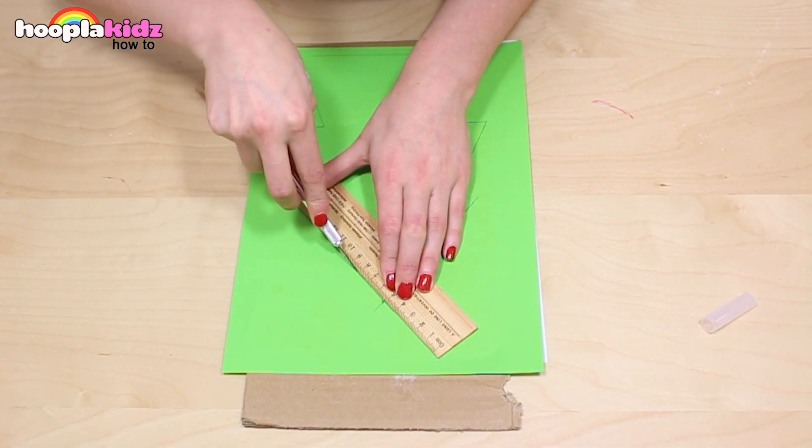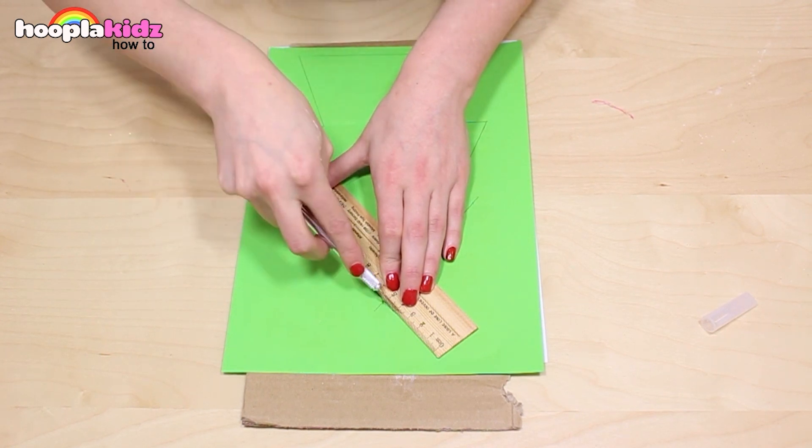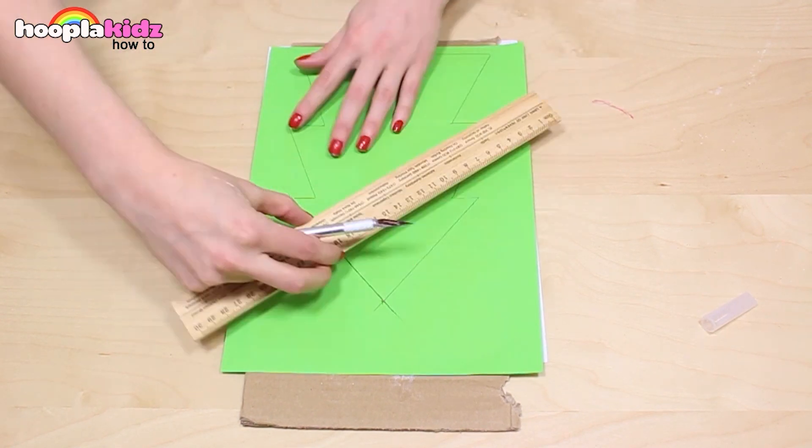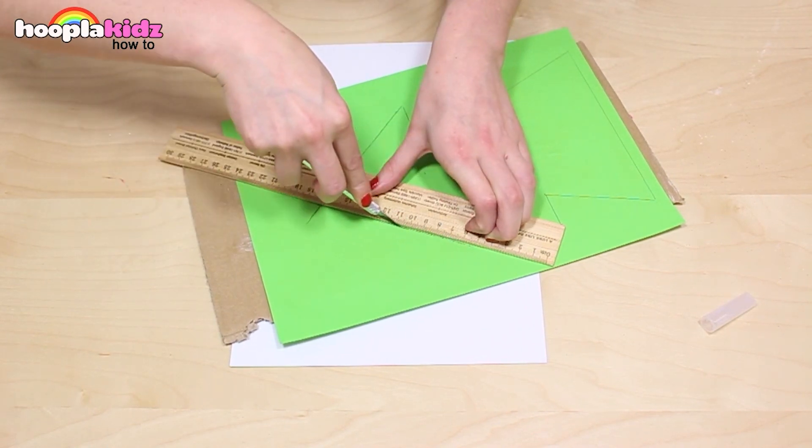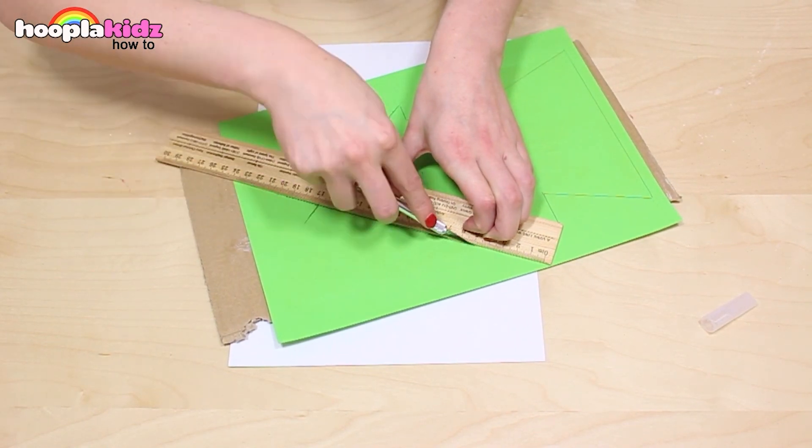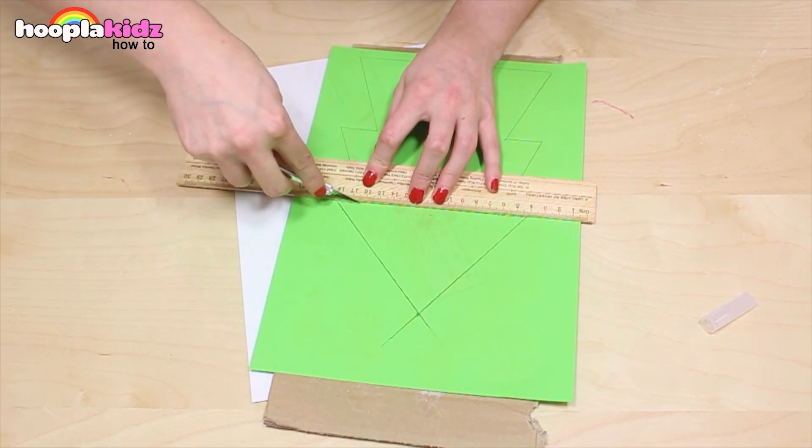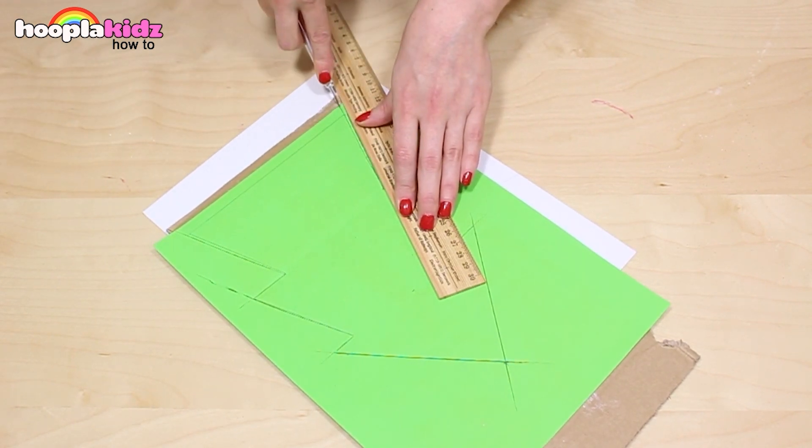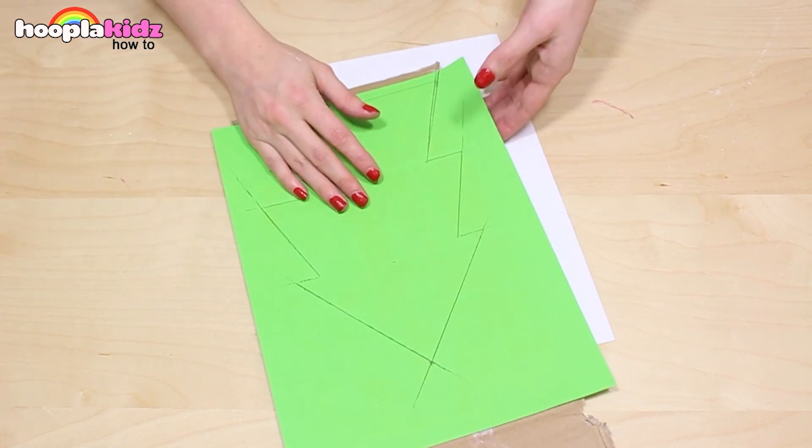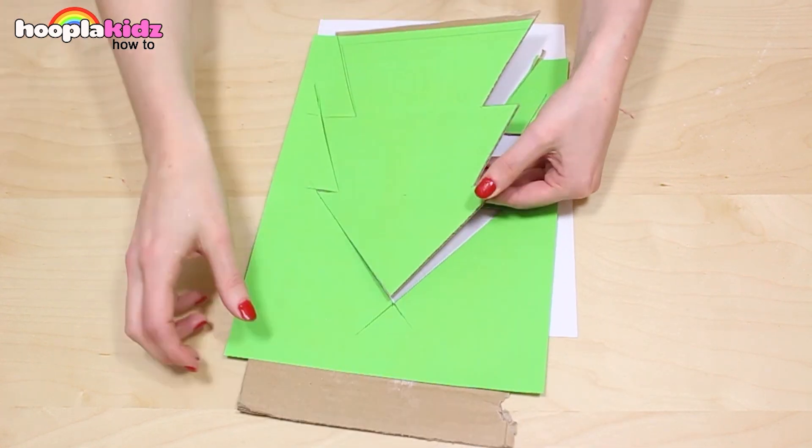Now I'm going to take my corner of the card. Use a craft knife and cut around the edge. Please get your parents' help to do this. I'm putting an additional piece of card underneath so I don't scratch the table. There you have it!